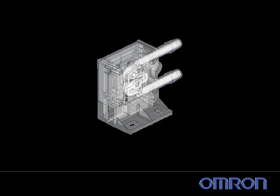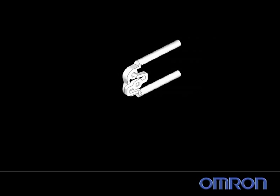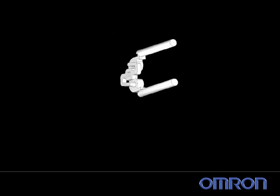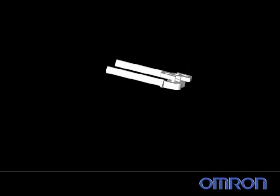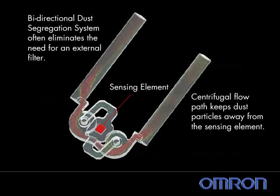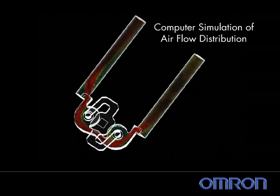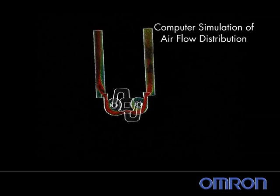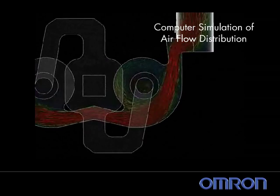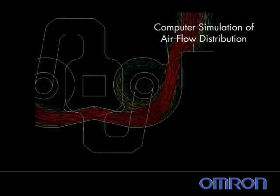The internal flow path of the D6FP is shown here. The two round chambers create a centrifugal force in which heavy dust particles are pulled to the outer flow path and clean air flows through the center path over the MEMS chip. This illustration of the air velocity pattern through the sensor chambers was created by a computational fluid dynamics (CFD) analysis of the flow path design.